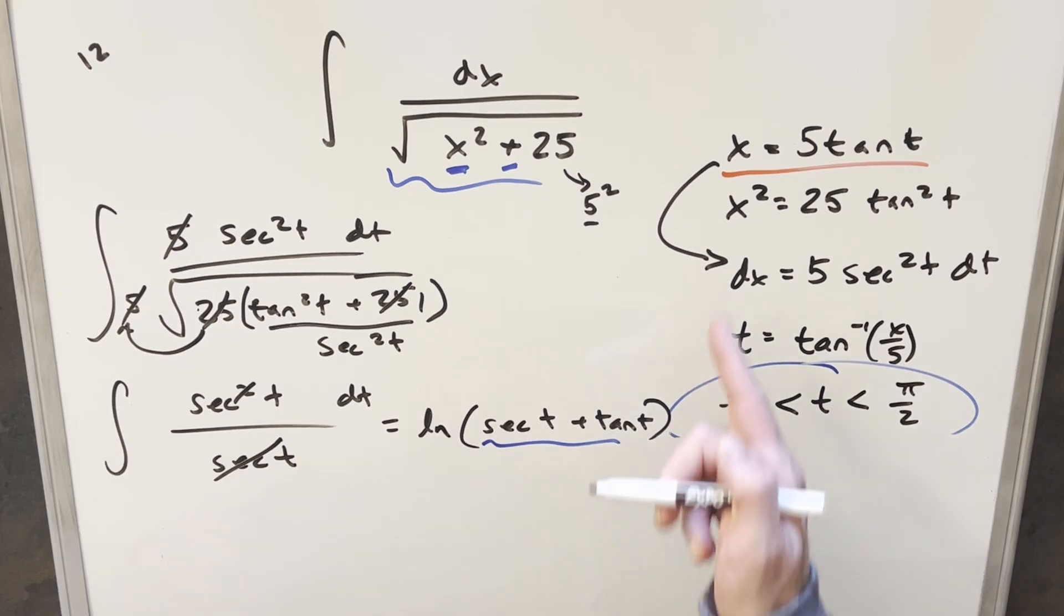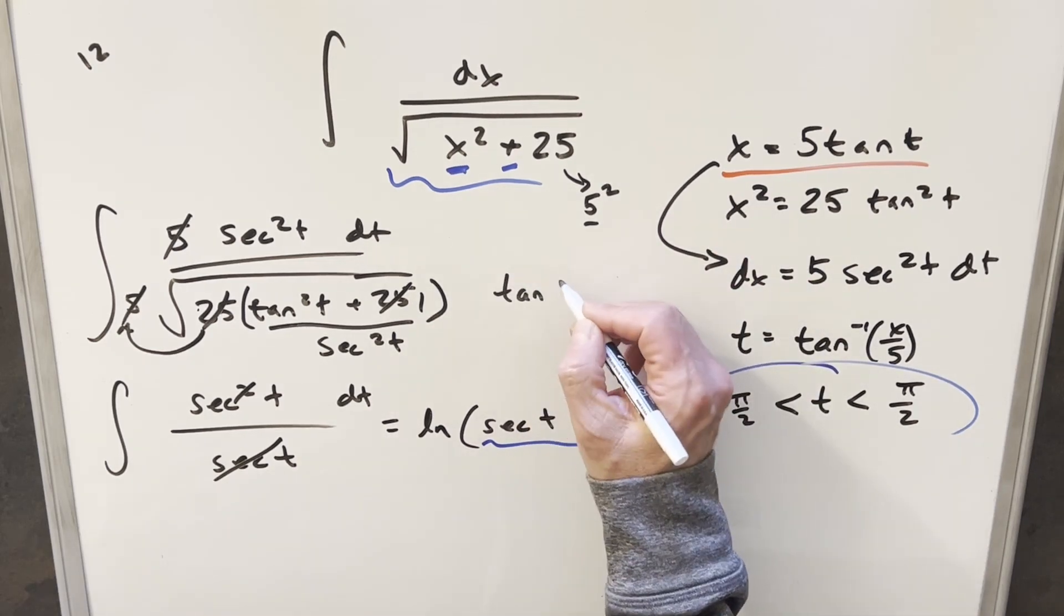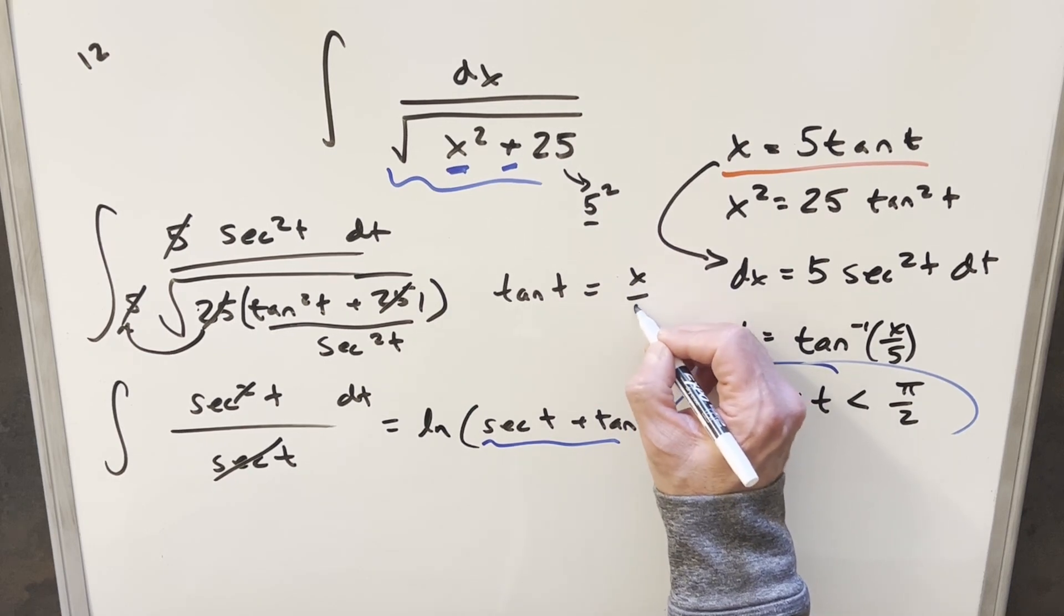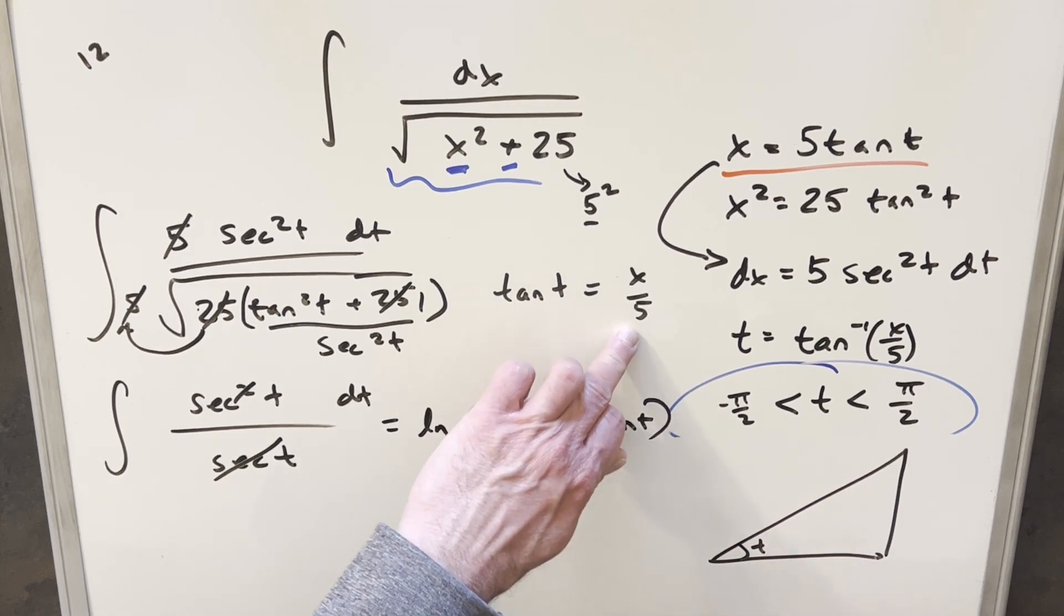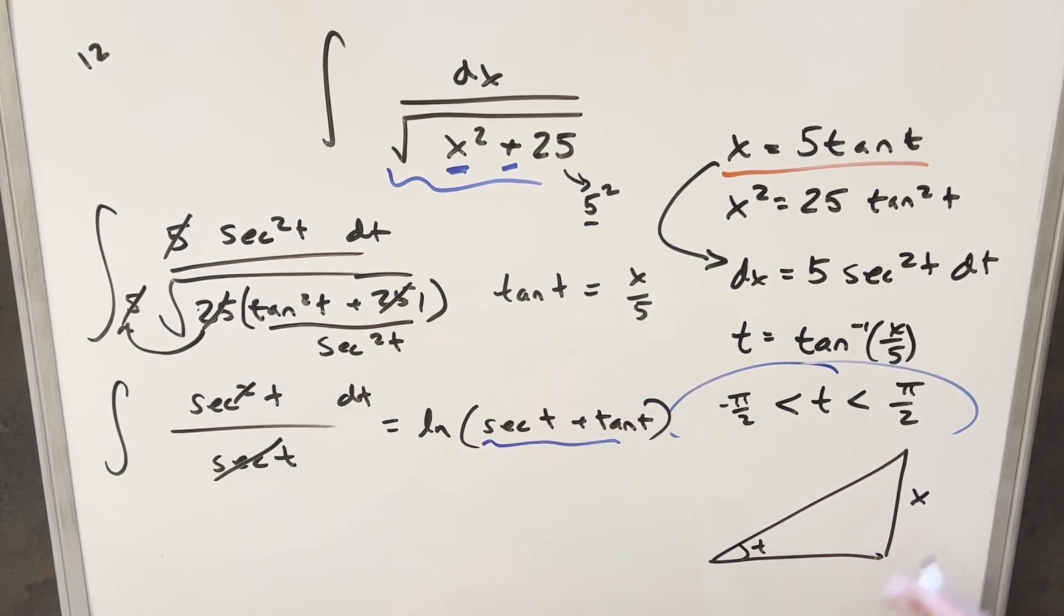And then now I just want to get this back to x. Now we had this, I erased it, but we had this value earlier for tan of t. That tan of t is going to be x over 5. We'll use that to draw the triangle over here. So if our angle is t and tan over t is x over 5, we can write this as opposite over adjacent x over 5. And then here we're going to have, for this other side, we'll have, this is going to become x squared plus 25.